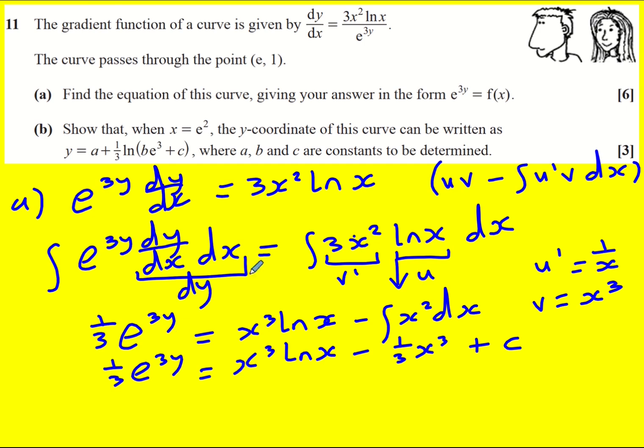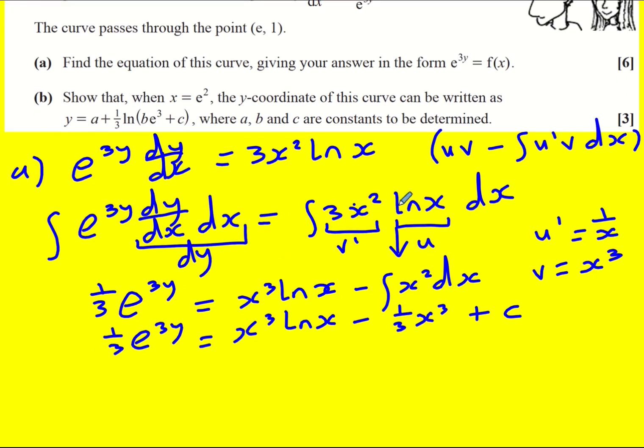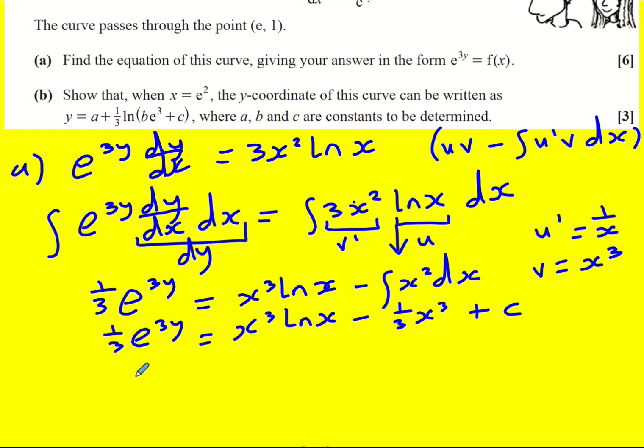Now it says give your answer in the form e to the 3y, so I just need to multiply through by 3. e to the 3y is going to be 3x cubed ln x minus x cubed plus 3c, or I could call it a new constant k, where k equals 3c.